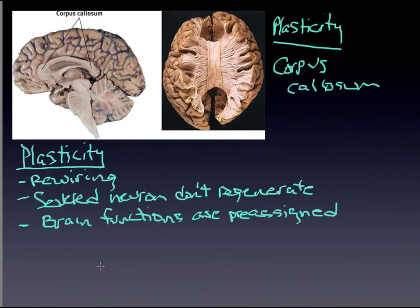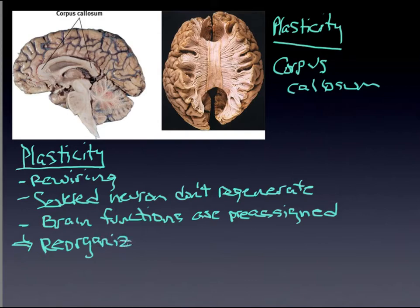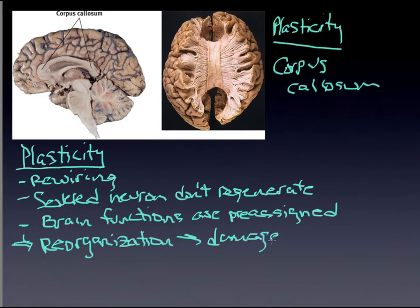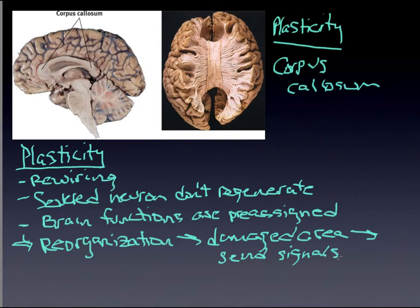So when we talk about plasticity, we are talking about reorganization — it is not a re-creation. It simply is the idea that the brain can rewire itself into other areas that are undamaged. When damaged areas are detected and the brain cannot operate in that area, it sends signals to undamaged areas. That's part of the idea of plasticity.